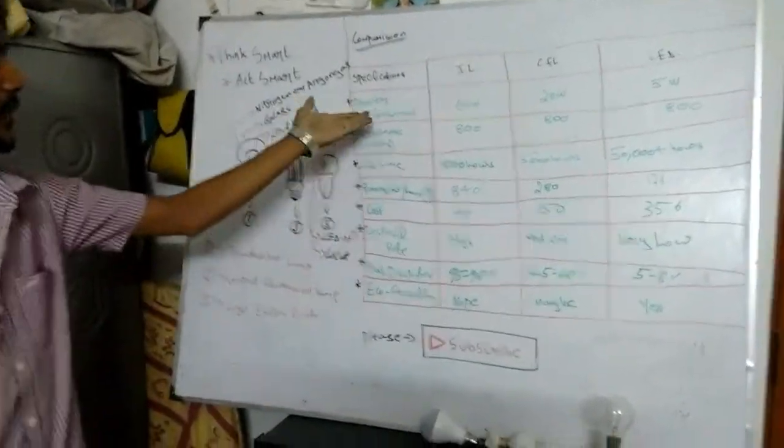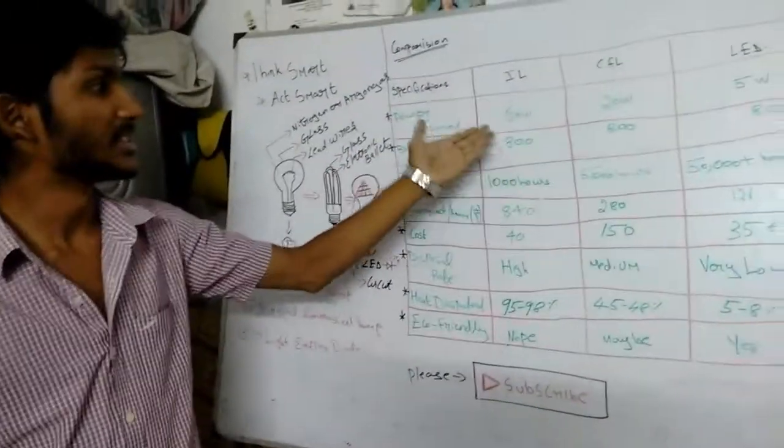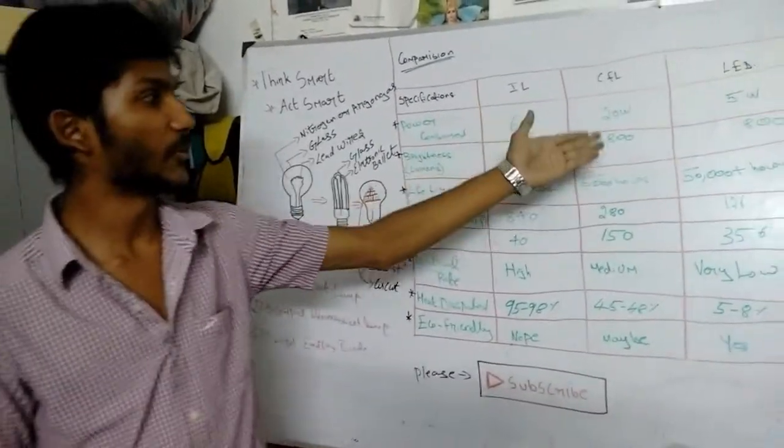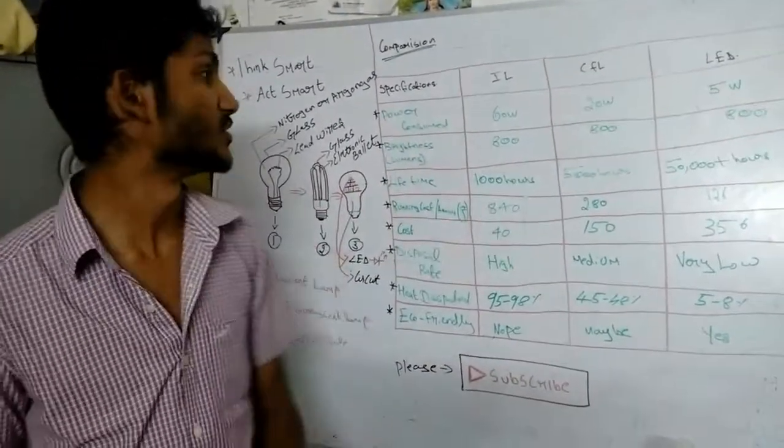We can see the comparison between the power consumed. Incandescent lamp: 60 watts is consumed. In CFL, only 20 watts is consumed. In LED, only 5 watts is consumed.